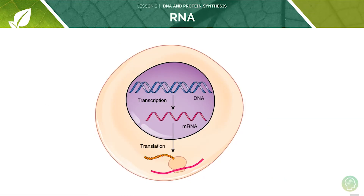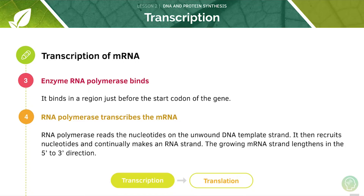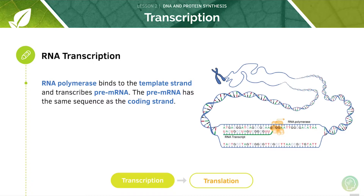Here is a small diagrammatic overview. Let's quickly recap the seven stages. First, the transcription factor binds to the promoter region of the particular gene. Then DNA helicase unwinds the gene region. We then get the binding of enzyme RNA polymerase, which transcribes the mRNA. Next, RNA polymerase reaches the stop codon and the resulting strand is known as pre-mRNA. RNA polymerase binds to the template strand and transcribes pre-mRNA, which will have the same sequence as the coding strand.